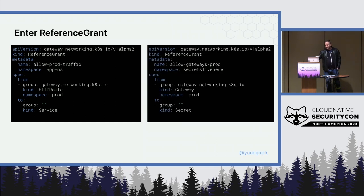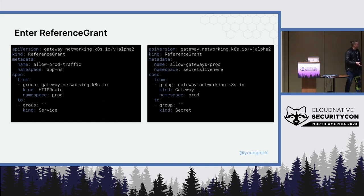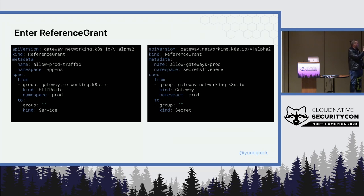Here's another reference grant example — this one is for a secret. In Gateway API, only gateways reference TLS config, so they're the only ones that need to be able to reference secrets. This one allows references from the gateway in the 'prod' namespace to secrets in the 'secrets-live-here' namespace. Same idea.